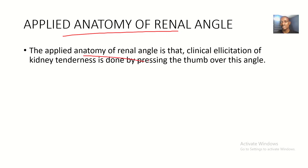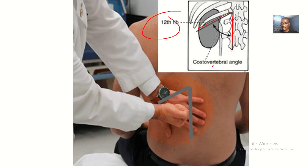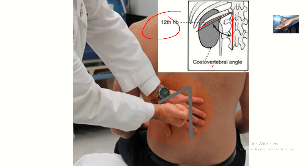Now for the applied anatomy of the renal angle: the clinical elicitation of kidney tenderness is done by pressing the thumb over this angle and hitting it. If the patient feels pain, the kidney is inflamed. If there are abnormal sounds, the kidney is also inflamed. The kidney is located just anterior to the twelfth rib.